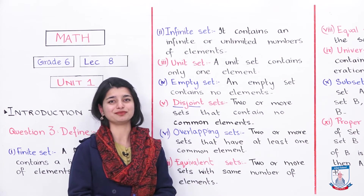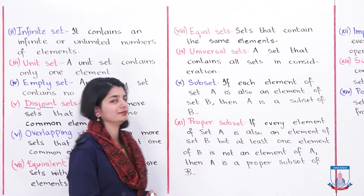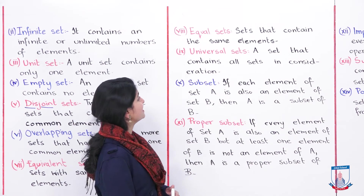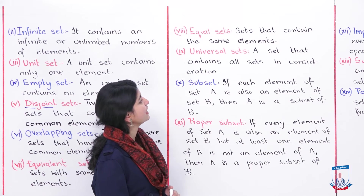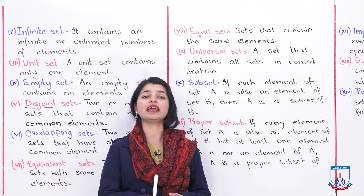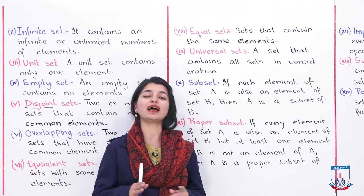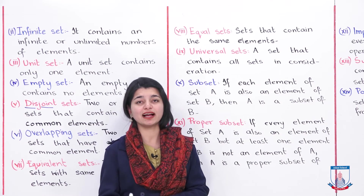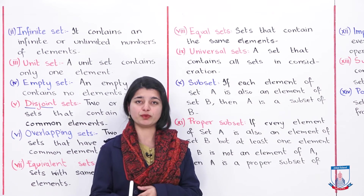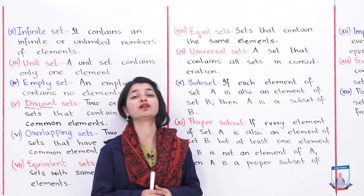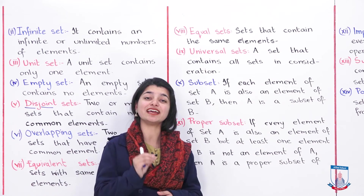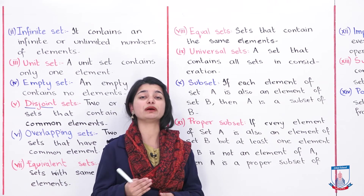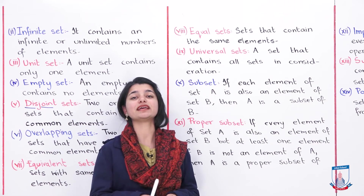Now let's see the equal set definition. Equal sets are sets that contain the same elements. In both sets, there are all identical elements — for example, sets P, A, S and S, P, A have all the same elements. So these two sets are equal. All elements need to be identical. If even one element is not the same, the sets will not be equal.